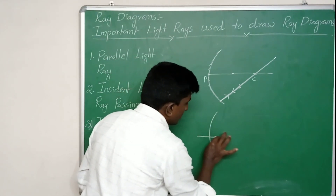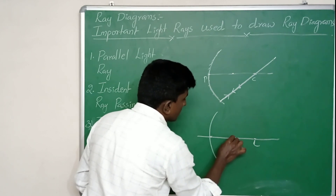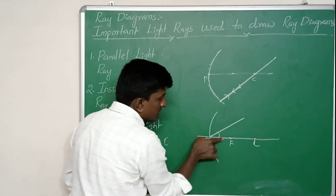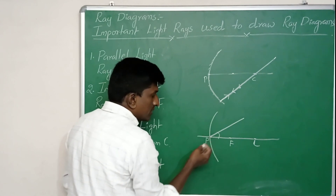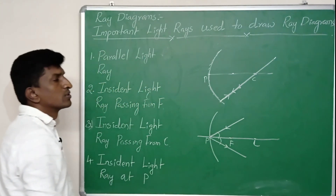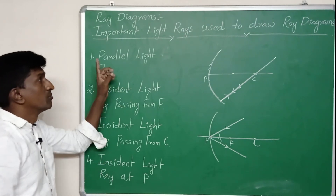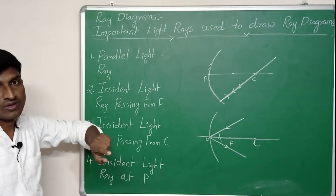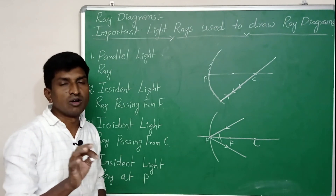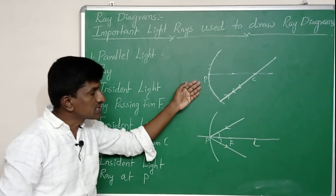The fourth light ray is the one incident at the pole P of the mirror. At the pole, the principal axis itself is the normal line, and with the same angle of incidence it gets reflected. Among these four light rays, we can use any two to draw a ray diagram, which gives the position and size of the image for a particular object placed in front of the curved mirror.